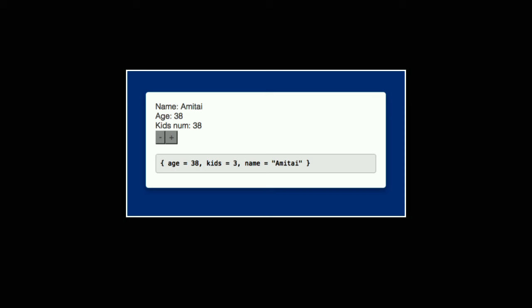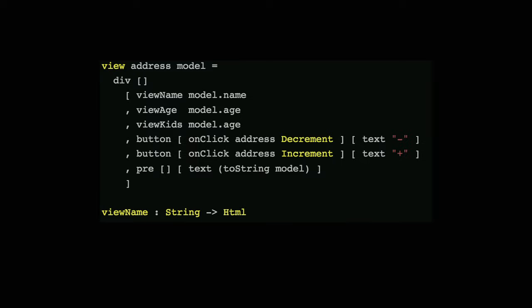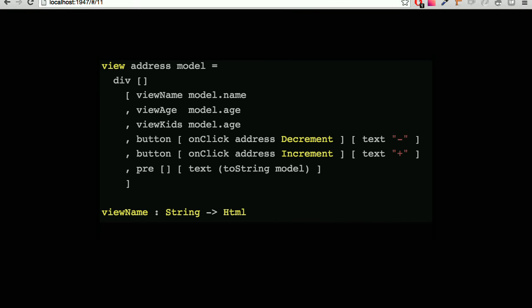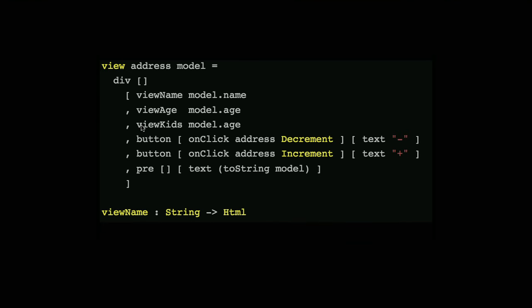Oh no, how embarrassing — I have a bug, in front of such a respectable audience. The number of kids is wrong. We can see in the debug that the age is 38, the kids is 3, and the name is Amitai, but somehow the kids number is appearing incorrectly. If we go back to the code we can actually see that the viewKids function — which also gets an integer — is being passed by mistake model.age.